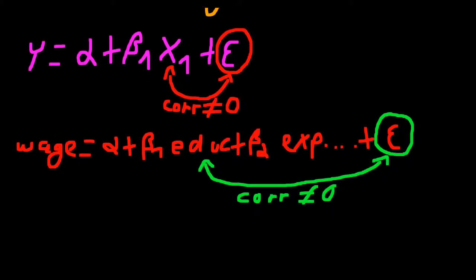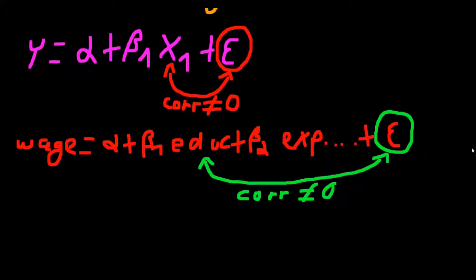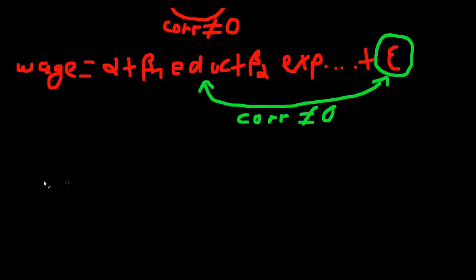So what can we do in such a case or such cases, because this is true for every omitted variable bias. Well, if we simply cannot control for omitted variables, because there's either no data or we cannot measure it, there are luckily ways to get around this problem.